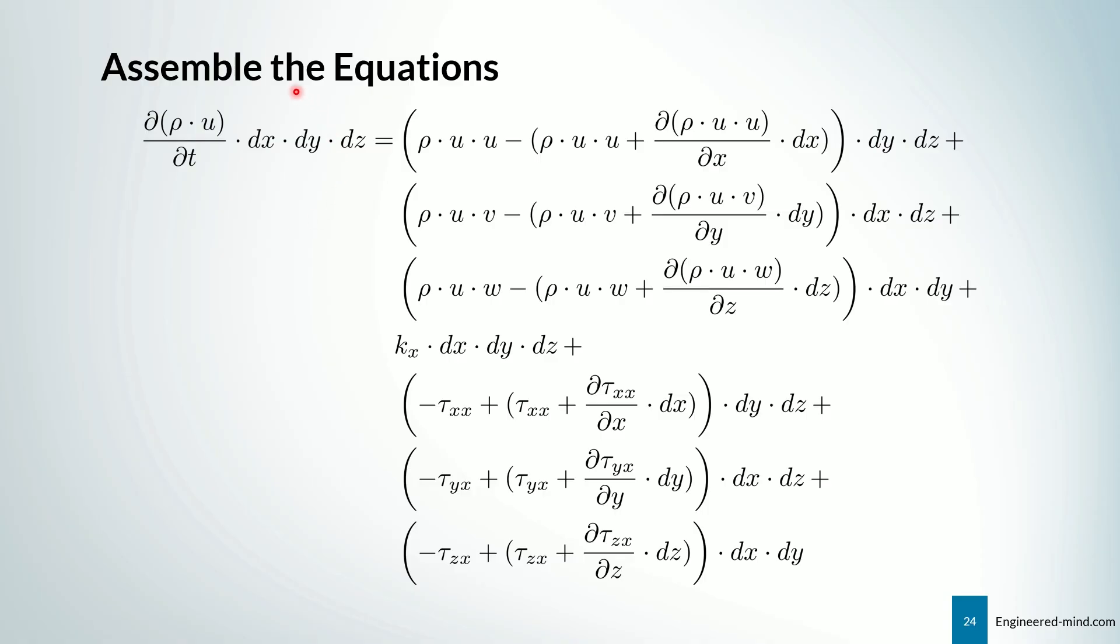So if we assemble everything, we get the following formula. So on the left hand side, we have the term as it is. On the right hand side, we have the momentum coming into our system, minus the momentum going out of our system, times the surface we are dealing with. The same goes for y, and the same goes for z.